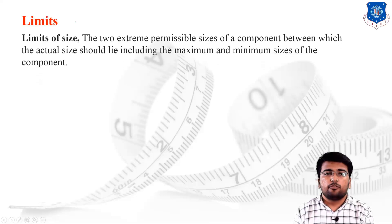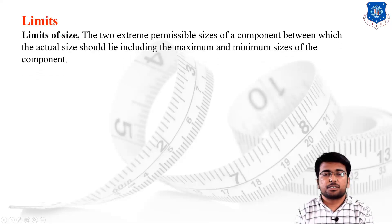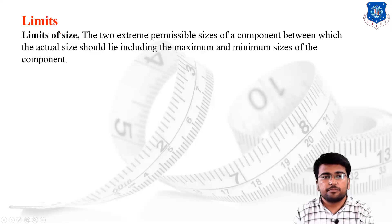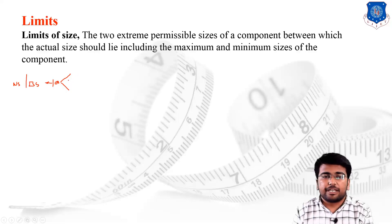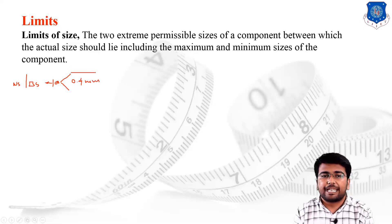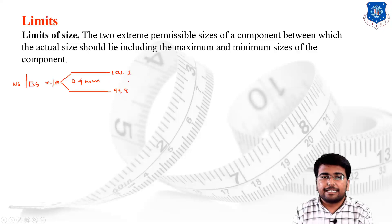The next topic is limits. Suppose I have to manufacture a shaft with a dimension of 100 mm. This particular size is known as the basic size or nominal size of the shaft. As we have discussed, we cannot manufacture the shaft at exactly 100 mm, so we provide a tolerance zone — let's say 0.4 mm. Then I can manufacture the shaft at 100.2 mm or 99.8 mm.